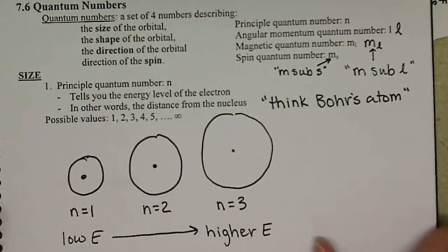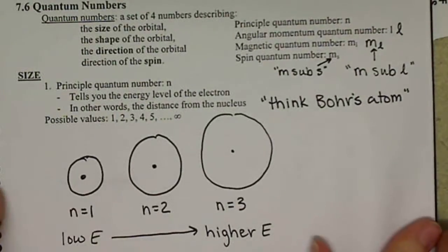So we have our principal quantum number n. As it gets bigger, bigger value means higher energy, means the electrons further away.